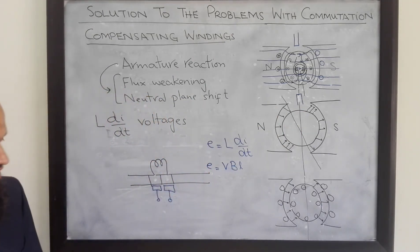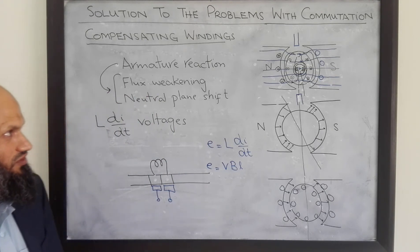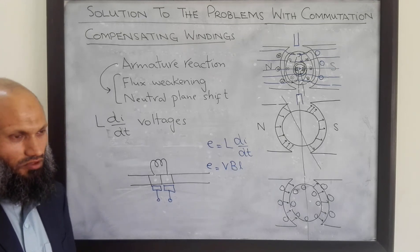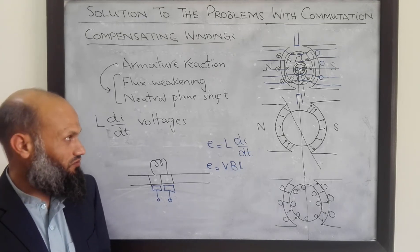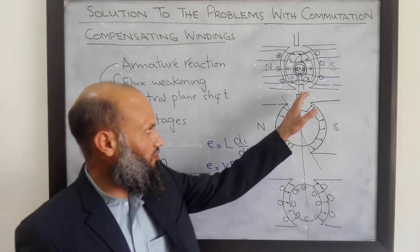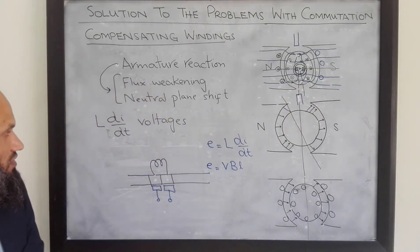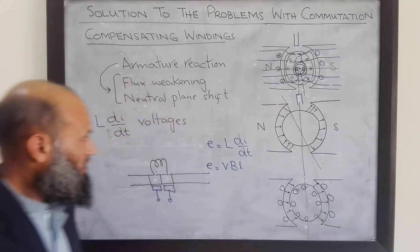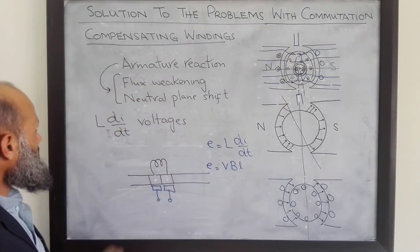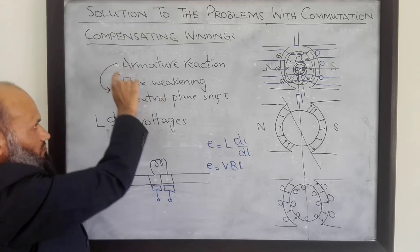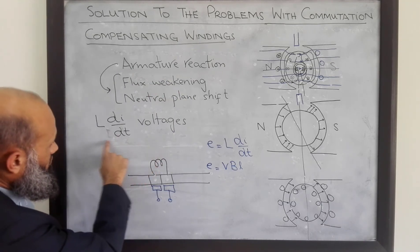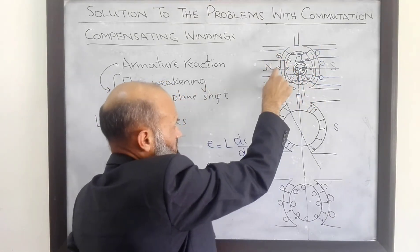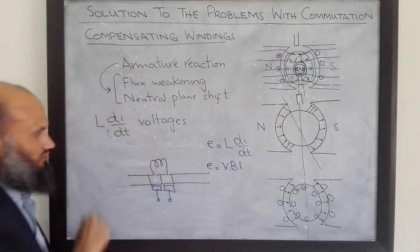In summary, we talked about three possible solutions. Brush shifting can to some extent resolve the problem of neutral plane shift, but cannot completely resolve it, and the flux weakening problem cannot be handled by this approach. Inter-poles resolve the problem of neutral plane shift and the L·dI/dt inductive kickback effect, but cannot resolve flux weakening. Compensating windings resolve the problem of neutral plane shift and also flux weakening; however, they cannot resolve the inductive kickback voltages. So in more expensive machines, they use both compensating windings and inter-poles — compensating windings to resolve the armature reaction effects and inter-poles to resolve the inductive kickback.